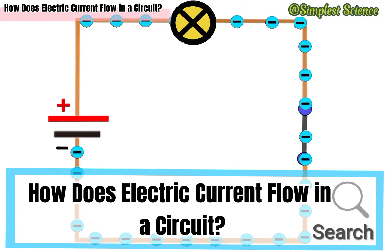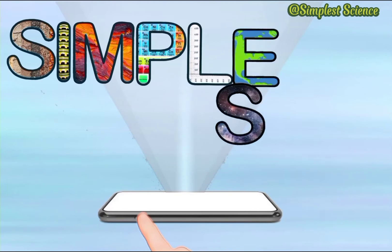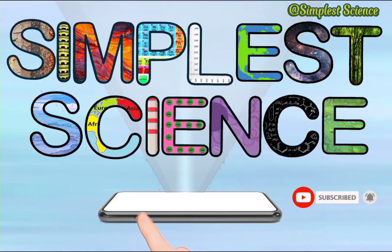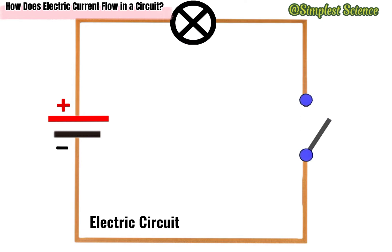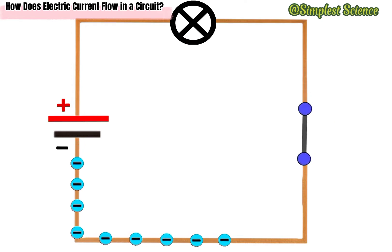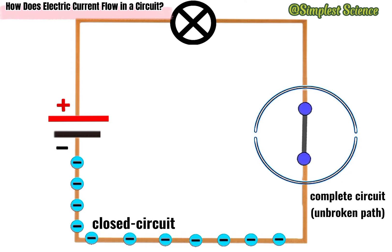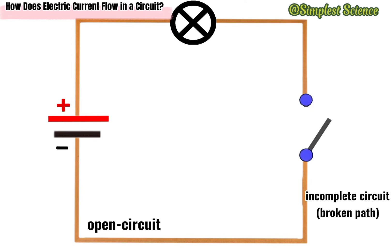How does electric current flow in a circuit? An electric circuit comprises four inseparable components that, if successfully connected to form a closed loop, make electric current flow possible. A closed circuit is a complete circuit since it offers an unbroken path to allow the continuous flow of electrons from the negative to the positive terminal of a battery cell. An open circuit is an incomplete circuit since there is a break that impedes the flow of electrons.